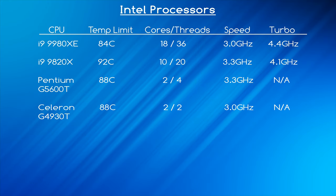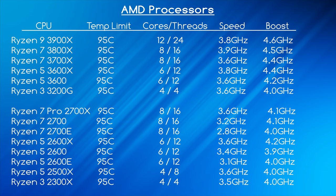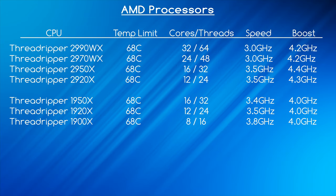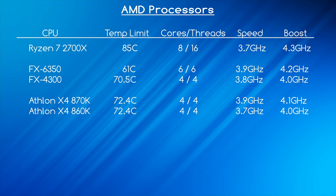But not all of Intel's CPUs have the same limit, as you can see with these ones here. Here are some of AMD's processors released in 2019 or earlier. All of them shown here have a temperature limit of 95 degrees Celsius. These AMD Threadripper CPUs all have a limit of 68 Celsius, and as you can see some of their other ones vary.